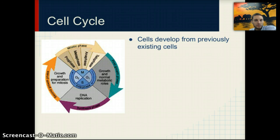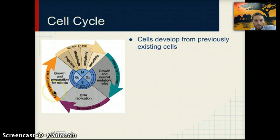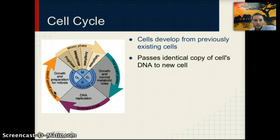Cells develop from previously existing cells and have a lifespan — depending on cell type, they can live anywhere from a month to several months or longer. The cell cycle is made up of two main stages: mitosis, which is actually a very short portion of the cell cycle, and interphase. Through this process, an identical copy of the cell's DNA is passed along to the new cell.